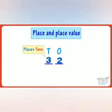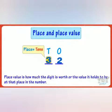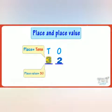Place value is how much the digit is worth for the value it holds at that place in the number. For example, the place value of three in this number is three tens, or thirty.